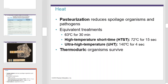Pasteurization reduces spoilage organisms and pathogens but does not sterilize solutions. Equivalent treatments include 63 degrees Celsius for 30 minutes, or higher temperature short time (HT-ST) at 72 degrees Celsius for 15 seconds, or ultra-high temperature (UHT) at 140 degrees Celsius for 4 seconds. If organisms are thermoduric, they can survive.